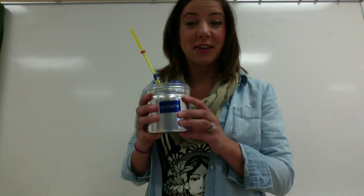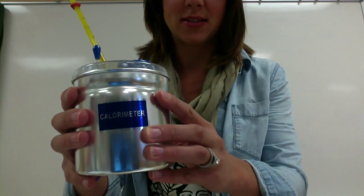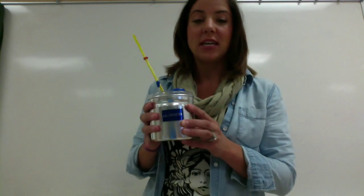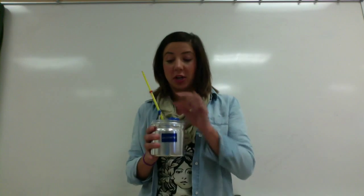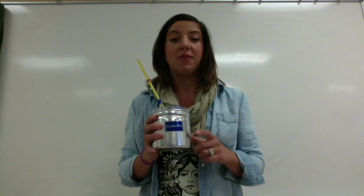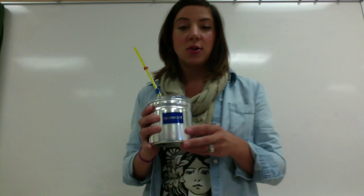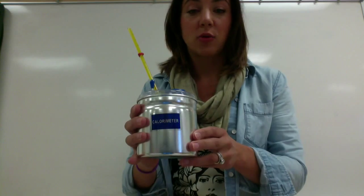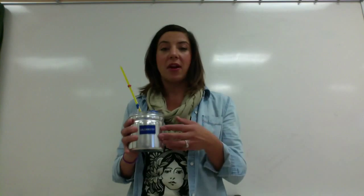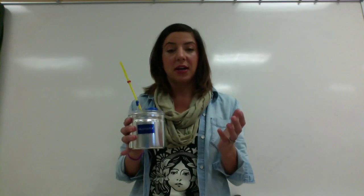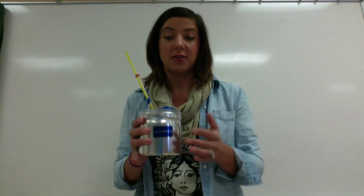Today we're going to talk about calorimetry. Right here I have a calorimeter — this is a closed system in which a chemical reaction happens, and what we measure is the temperature change of the system. From there we can calculate the molar enthalpy of the chemical reaction. A calorimeter must be a closed system; if it isn't, heat will leave and you won't be able to calculate the molar enthalpy.